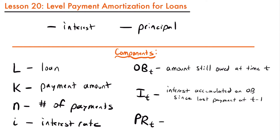The principal repaid at time T is the amount of the loan that we paid at a particular time. When we make a payment, part of it goes towards the interest and part of it actually goes towards the loan — and this is the part that goes towards the loan. Those are all the components you need to be familiar with for the amortization process. Now let's look at an example problem where we will use and calculate these different components.